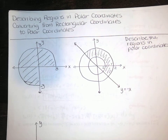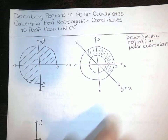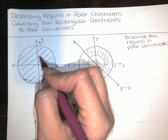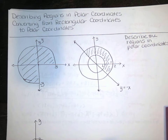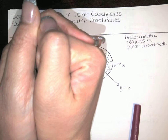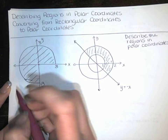Remember from the last video: when thinking of values for r, we think of circles radiating out from the origin. r equals 0 is just the single point at the origin. r equals 1 is a circle of radius 1, r equals 2 is a circle of radius 2. So here r starts at 0 and goes all the way out to 3 — r goes from 0 to 3.